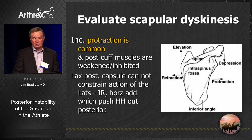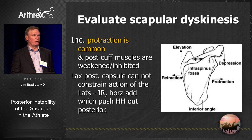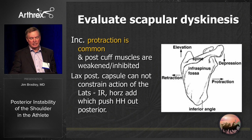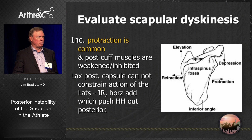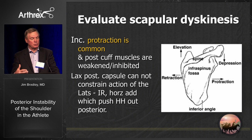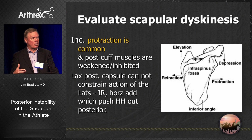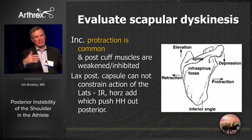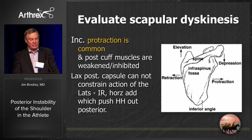You always want to evaluate for scapular dyskinesis, especially in throwers, because throwers naturally are protracted — that's normal for a pitcher. We published that study. What happens is their posterior cuff muscles weaken and get inhibited, and the lax posterior capsule cannot constrain the action of the latissimus as they go into internal rotation and horizontal adduction. The pec in front and the lat in back have to balance when they throw. Once the cuff muscles weaken, the lat just pulls the shoulder right out the back.